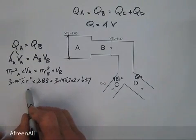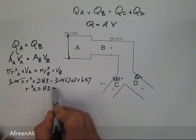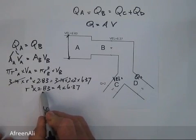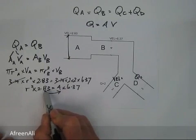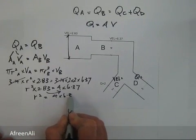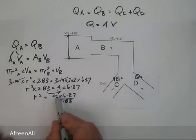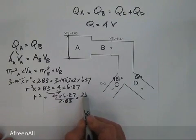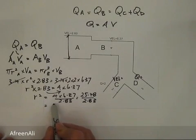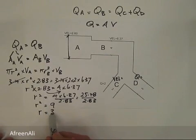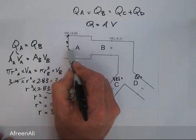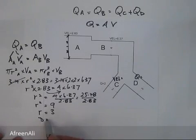We're left with R squared times 2.83 equals 4 times 6.37. Transposing: R squared equals 4 times 6.37 divided by 2.83, which is 25.48 divided by 2.83, equal to 9. So if R squared equals 9, then R equals 3. R was the radius at A, so the diameter at A equals 6.